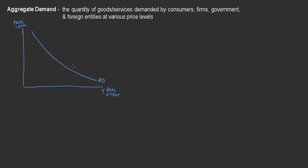Let's understand why this slopes down — there are a few things going into it. The first one is price level and wealth. If we just look at what's happening with the price level itself, this applies to consumers and the government. Let's assume in the most simplistic case that you have $1,000, and a laptop is currently being sold for $500 — this laptop is the stand-in for the entire economy's average price level. Your $1,000 is worth two laptops.